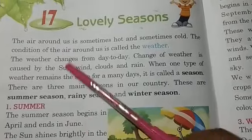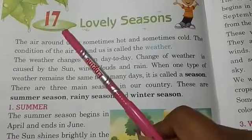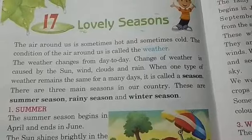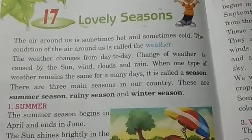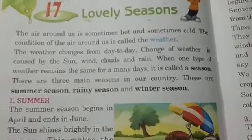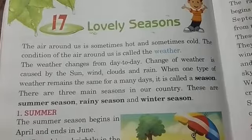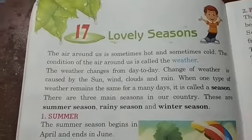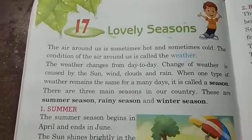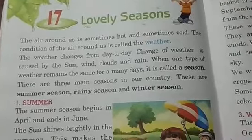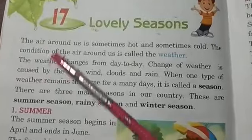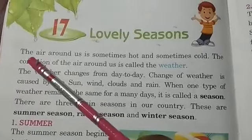Welcome class. Today we will start chapter 17, lovely seasons. We know that there are a lot of seasons. The first one is summer, second one is rainy, then winter, then autumn, and lastly the spring season. So now let us start the chapter.